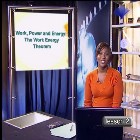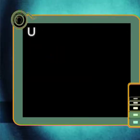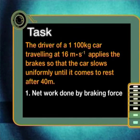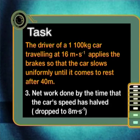Here is a task to keep you busy, all about the work-energy theorem. The driver of a 1,100 kilogram car traveling at 16 meters per second applies the brakes so that the car slows uniformly until it comes to rest after 40 meters. Calculate the net work done by the braking force, the net force exerted by the brakes, and the net work done by the time that the car's speed has halved — that is, dropped to 8 meters per second.